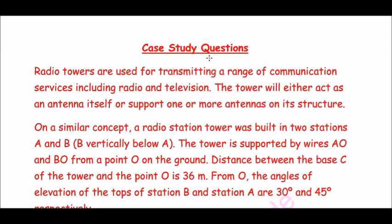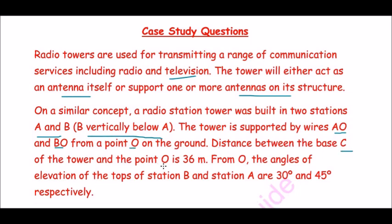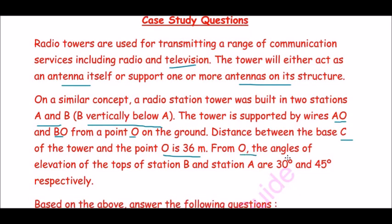The case study question is: radio towers are used for transmitting a range of communication services including radio and television. The tower will either act as an antenna itself or support one or more antennas on its structure. On a similar concept, a radio station tower was built in two stations A and B, where B is vertically below A. The tower is supported by wires AO and BO from a point O on the ground. Distance between the base C of the tower and the point O is 36 meters. From O, the angles of elevations of the tops of stations B and A are 30 degrees and 45 degrees respectively.